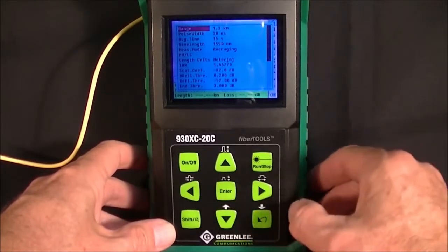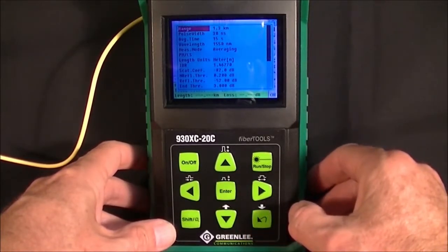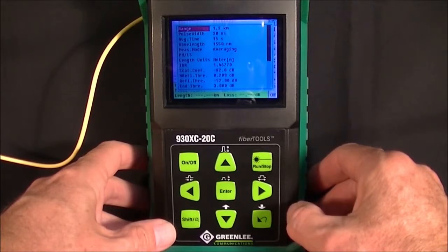You'll notice that the pulse width is automatically selected for 30 nanoseconds. We're going to do 15 seconds of averaging.